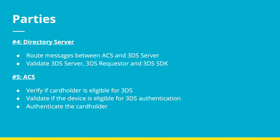The next two parties are also present in 3DS 1.0, which is the directory server and the ACS. The directory server is responsible to route the messages between the ACS and the 3DS server. It also is responsible to validate the 3DS server, the requester, etc.